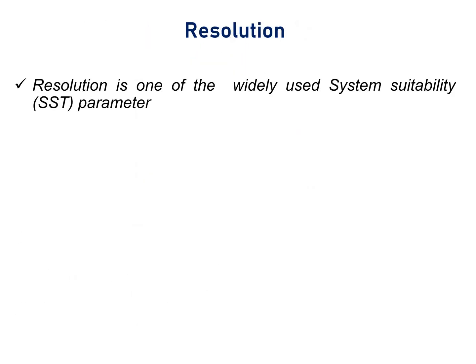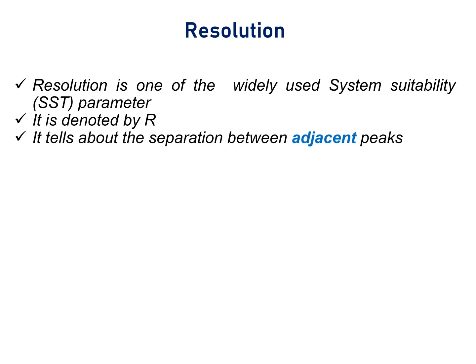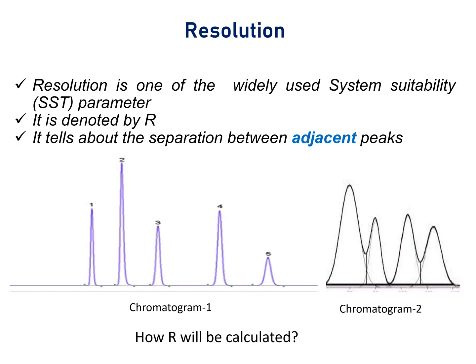Resolution is one of the widely used system suitability parameters in chromatography analysis. It is denoted by R. It tells about the separation between two adjacent peaks. In this chromatogram, it contains a total of five peaks and each peak is separated from its adjacent peak. For example, peak 2 is separated from peak 1.